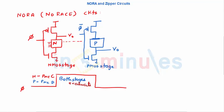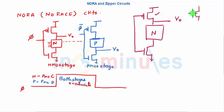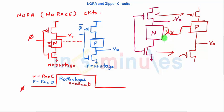So far we used PMOS transistors only for precharge, with an N-type logic block and a footer transistor below, taking the output there. NORA does exactly the opposite: instead of using PMOS only for precharge, it uses PMOS transistors for logic as well. So in place of the N-type logic block, we insert a PMOS logic circuit. The output is taken between the PMOS and NMOS sections. We have replaced the N-block with P, changed the output position, and can now pass our output directly to the next stage input.